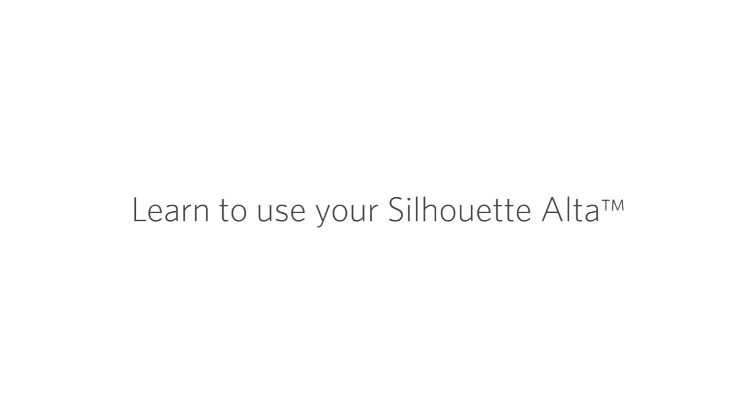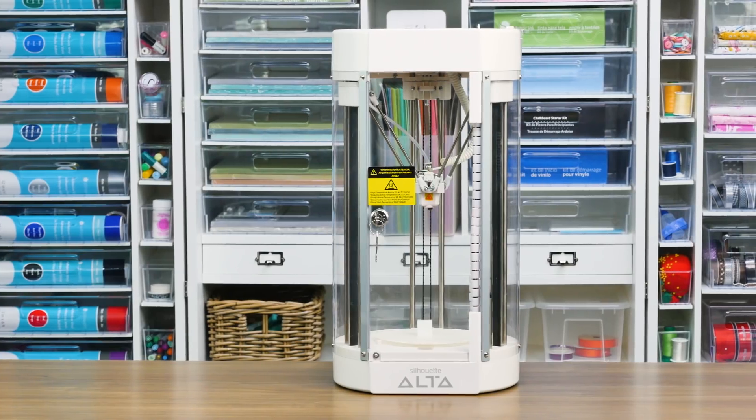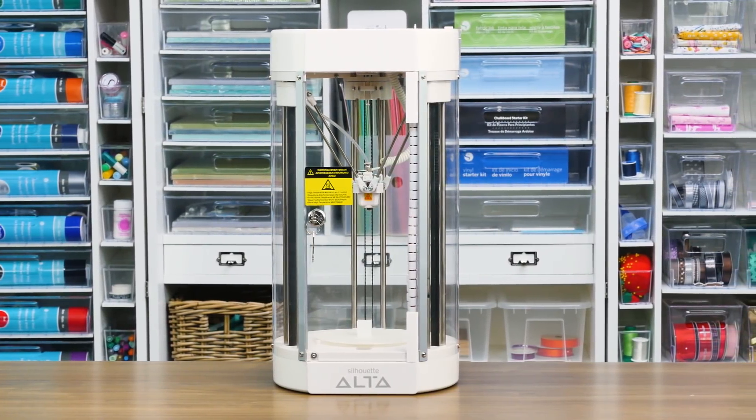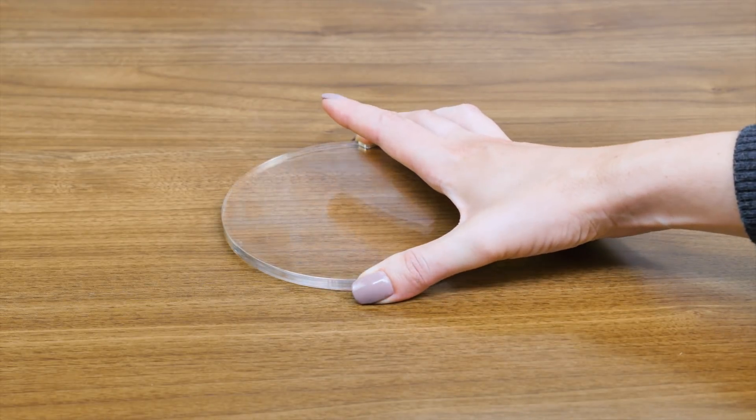Learn to use your Silhouette Alta. When the Silhouette 3D software is installed, it's time to prepare the Alta to print. The platform, also known as a build plate, is what your 3D object will be built on.